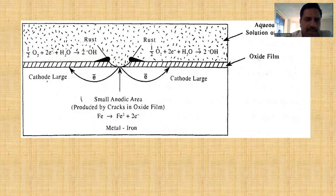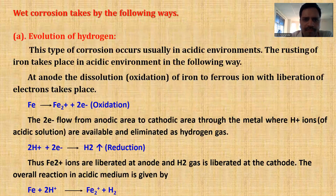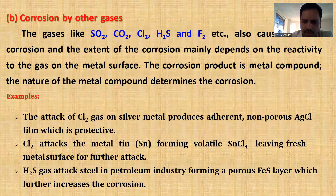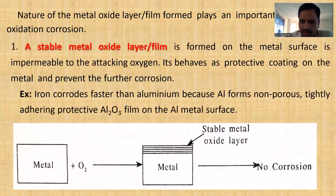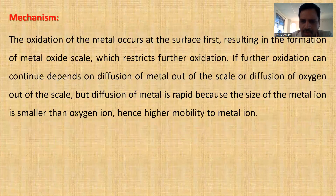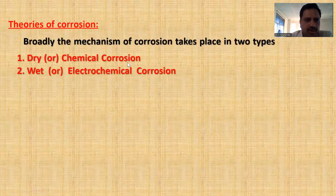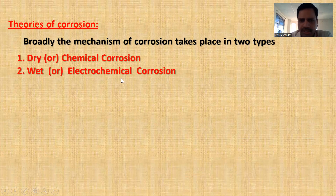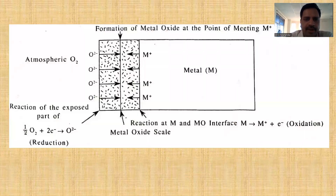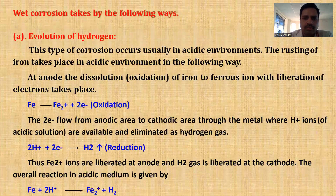This is the mechanism of corrosion. Corrosion is formed by two ways: dry corrosion and wet corrosion. Dry corrosion can take place by oxidation, by other gases, and liquid metal corrosion. Wet corrosion takes place by absorption of oxygen and evolution of hydrogen. Thank you.